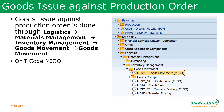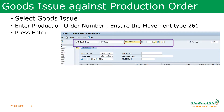Goods issue against production order is done through transaction MIGO, or the menu path is shown here. MIGO is a transaction used for many purposes — one of them is goods issue to the production order. After entering MIGO, we have to select goods issue (A07 goods issue) and then R08 order, and enter which production order we are supposed to issue. Once you enter these things, movement type 261 will appear automatically — we have to ensure that, then press enter.